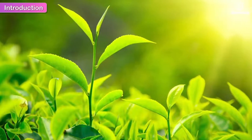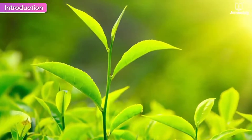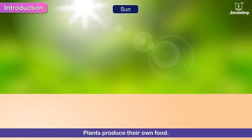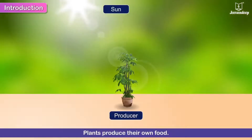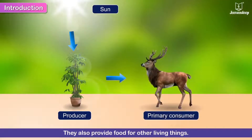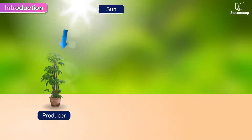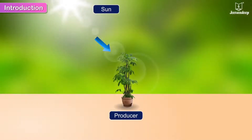Plants are a very important part of the natural environment. They are the only living things that not only produce their own food, but provide food for other living things as well. All living things are dependent on plants in some way or the other. We shall learn a little more about these producers of food and how they do it.